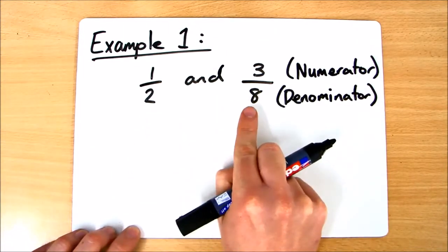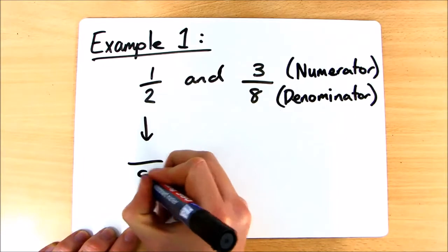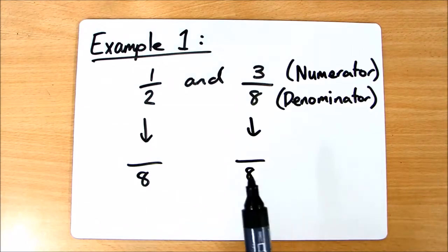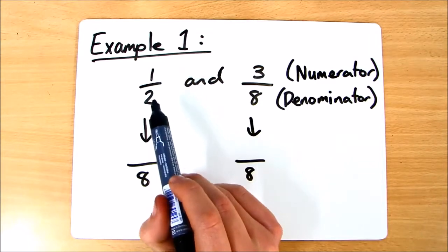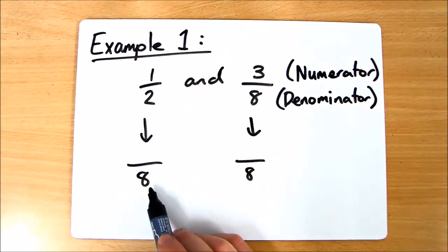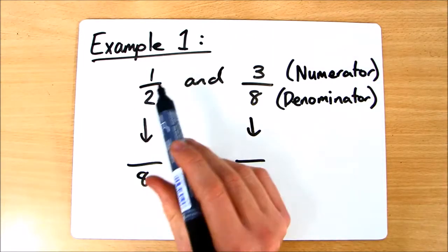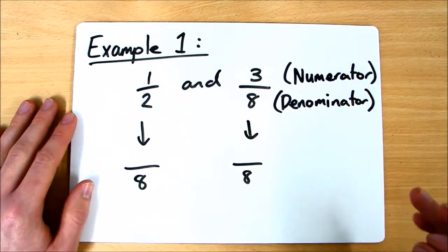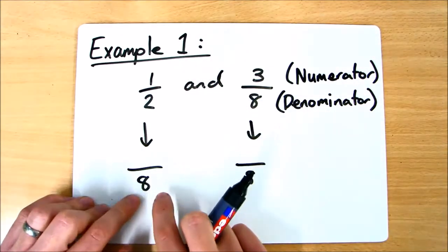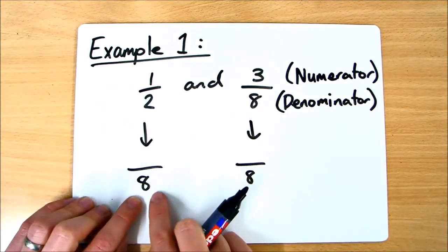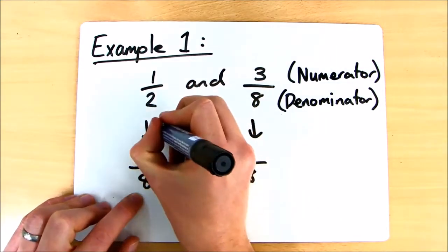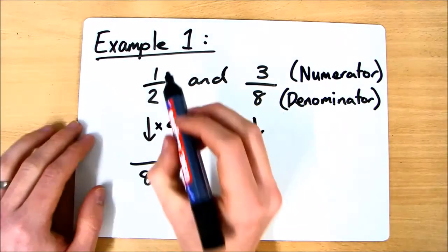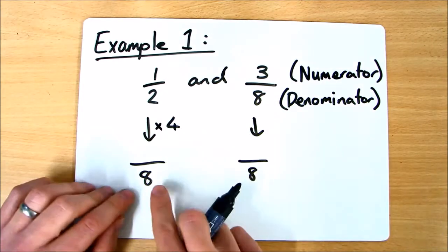The first thing we check is: does one denominator go into the other? You can quite clearly see that 2 would go into 8. So we'll make 8 our common denominator. Now we need to look at what we did to the 2 to get to 8, because whatever we do to the bottom we have to do to the top. We've decided 8 is our lowest common denominator, so we need to make the numerator match. We times 2 by 4 to get 8, so on this arrow I'll note that we times this fraction's denominator and numerator by 4.